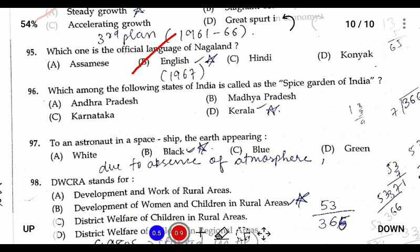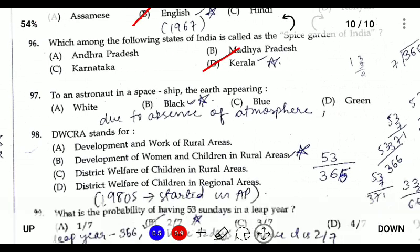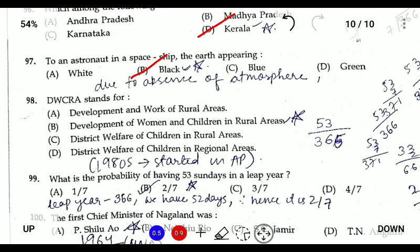Question ninety-seven: to an astronaut, the sky appears black because there is no atmosphere in space. On Earth, we see a blue sky due to the scattering of light. However, in space there is no atmosphere, so there is no scattering of light, and as a result, the astronaut sees only black.